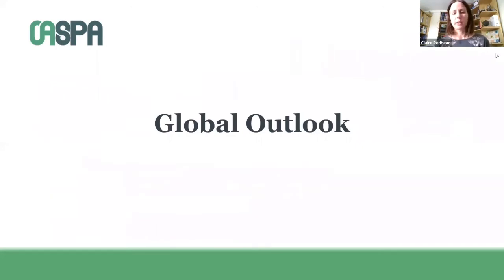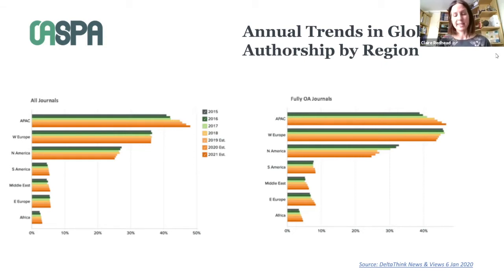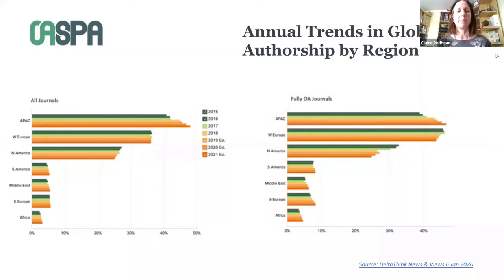OASPA has always had an international outlook. We can see this in our membership and our events. Now let's look at what's happening in the open access publishing world — trends in open access publishing and recent global policy developments. This is from a DeltaThink report looking at trends over the past few years and estimated for the near future. The headlines are that the proportion of papers from countries in the Asia Pacific region is increasing, Western Europe is flatlining overall, North America is decreasing — and especially the proportion of open access, which is interesting. Other regions are steadily increasing but in much smaller amounts of articles.